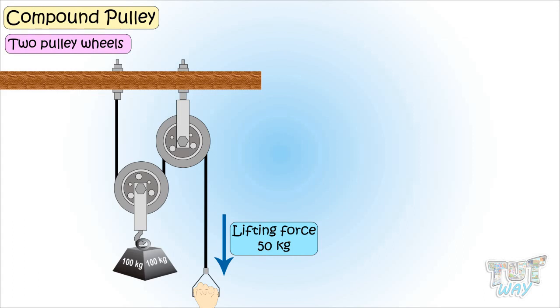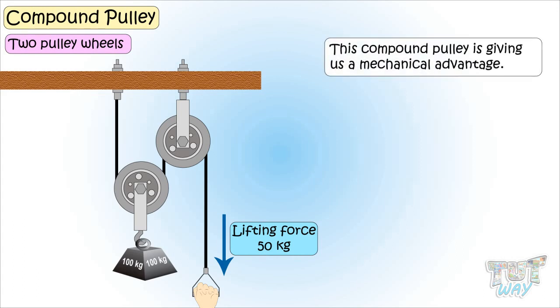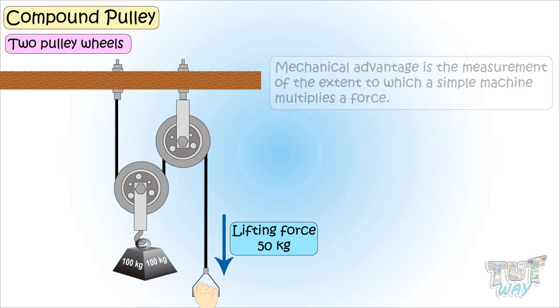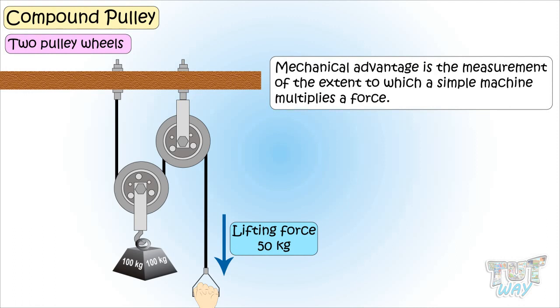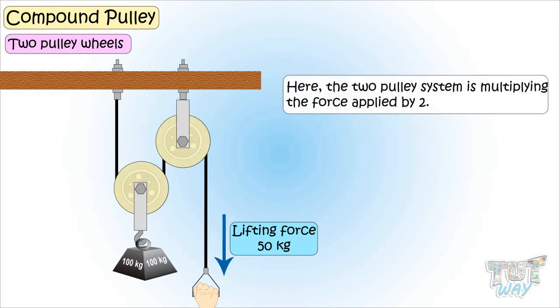That is, this compound pulley is giving you a mechanical advantage. Mechanical advantage is the measurement of the extent to which a simple machine multiplies a force. Here the two pulley system is multiplying the force applied by two. That is, you are applying a force of 50 kg and it is giving you a force of 100 kg.